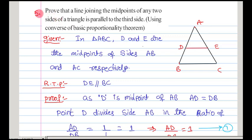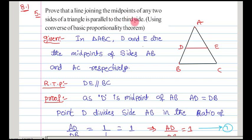Welcome to GSR Math Academy. This is our fifth problem of exercise 8.1 of similar triangles. Let us observe the question: prove that a line joining the midpoints of any two sides of a triangle is parallel to the third side.